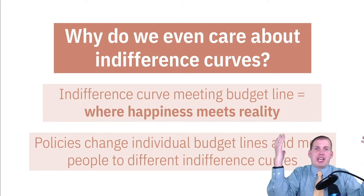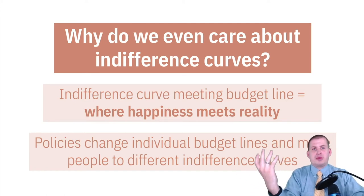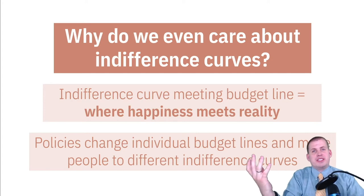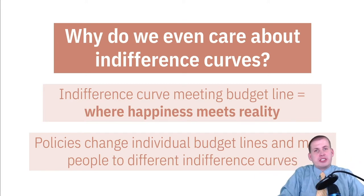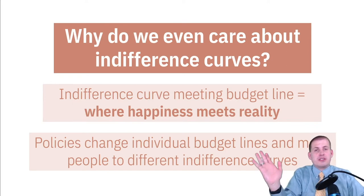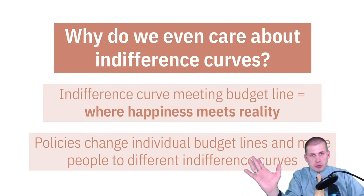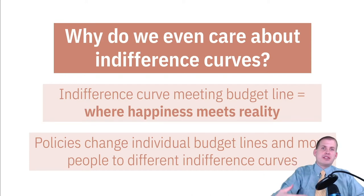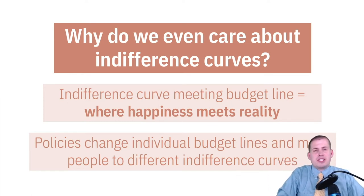Taxing one thing could mean the consumption of a complementary or related good also changes. The classic example: if you tax salt, the demand for pepper is also going to change because salt and pepper go together. If you mess with one thing it's going to have consequences later on. We want to be able to systematically measure how people respond to changes in prices, and indifference curves and budget lines let us do that using models — giving us directions and some math behind the changes.